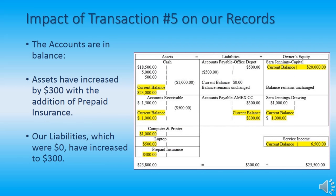Now talking about the impact of Transaction 5 on our records. The accounts are in balance. Assets have increased by $300 with the addition of prepaid insurance. Our liabilities, which were zero, have increased to $300. Our assets total $25,800. Our owner's equity totals $25,500. $25,800 is the total amount of liabilities plus owner's equity, which equals our assets of $25,800. The accounting equation remains in balance. Congratulations for making it this far — now on to Transaction 6.